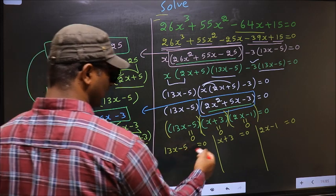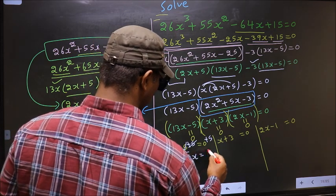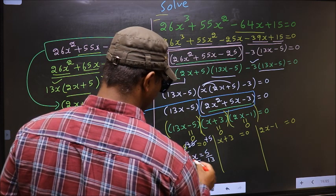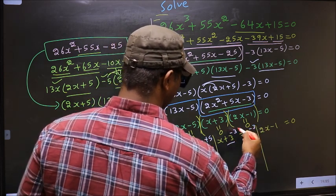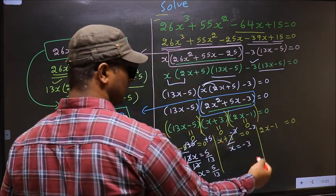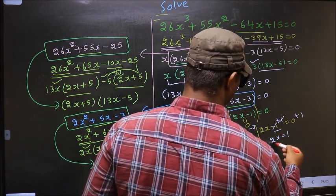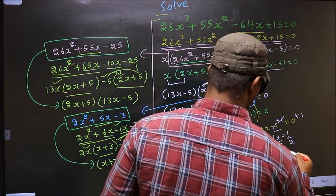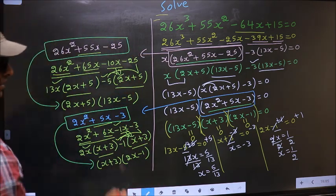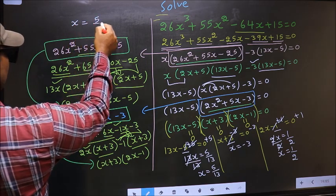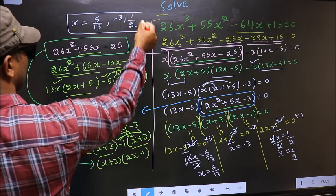Now, to get x value from here, I should remove minus 5, so you add 5. You get 13x equal to 5. Now I should remove 13, so divide by 13. You get x equal to 5 by 13. Here I should remove plus 3, so subtract 3. You get x equal to minus 3. Here I should remove minus 1, so you add 1. You get 2x equal to 1. Now I should remove 2, so divide by 2. You get x equal to 1 by 2. So the x values that we got are 5 by 13, minus 3, and 1 by 2. This is our answer.